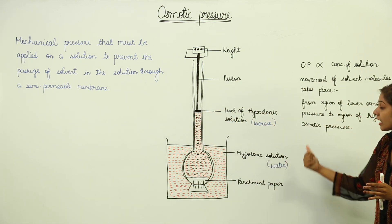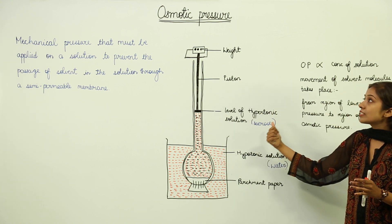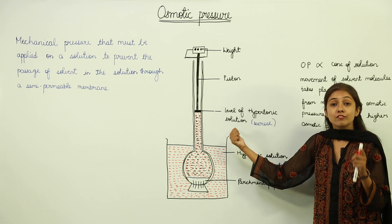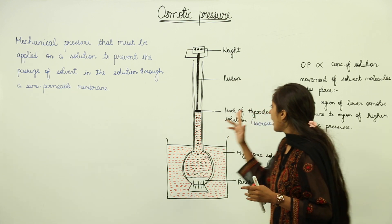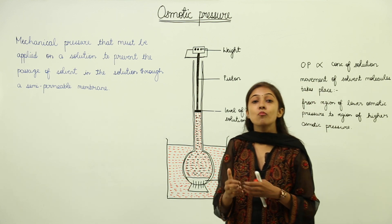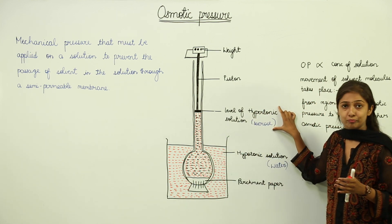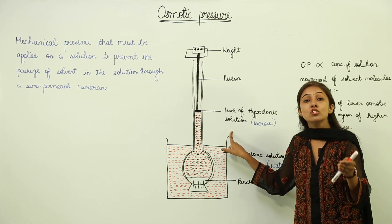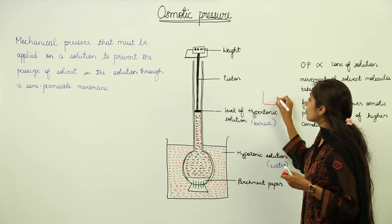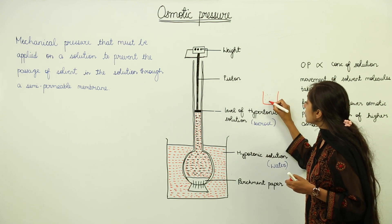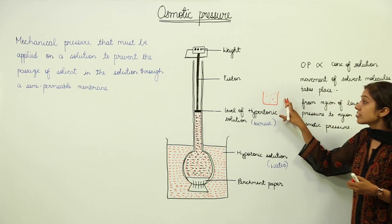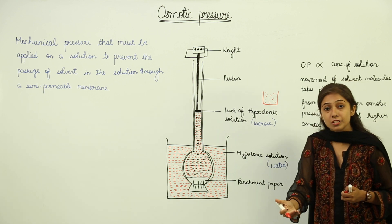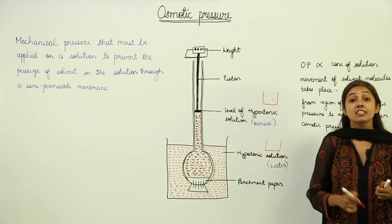We will be discussing hypertonic solution and hypotonic solution on the basis of osmotic pressure. A hypertonic solution is the solution which has higher osmotic pressure — it has more solute particles, means it is a concentrated solution. In case of sucrose solution, there is a presence of additional solute particles in the form of sugar, so it is more concentrated. A hypotonic solution is the solution which has lower osmotic pressure and it is a more dilute solution.